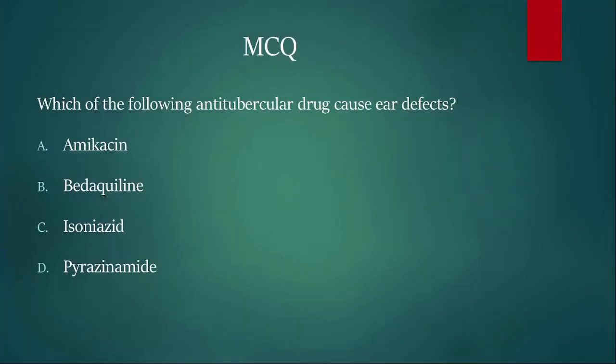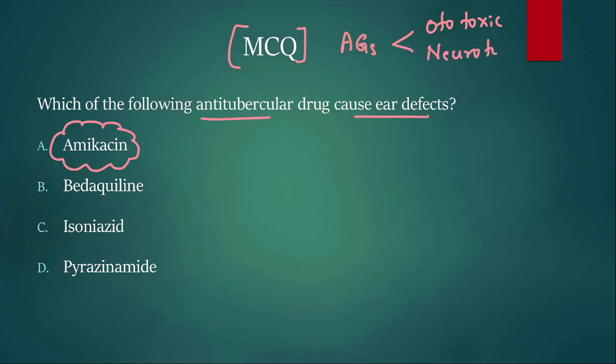Moving on to the next question MCQ. Which of the following anti-tubercular drug causes ear defects? Ear problems. We all know amikacin which belongs to aminoglycosides. Any aminoglycosides they are known to produce ototoxicity. They can cause vestibular toxicity and ototoxicity. They are also going to cause neurotoxicity. That means they cause neuromuscular blockade. Neurotoxicity mainly they cause neuromuscular blockade and they are also toxic to the kidney, nephrotoxic. So whenever you think of aminoglycosides think they are ototoxic, neuromuscular blockade and nephrotoxic.